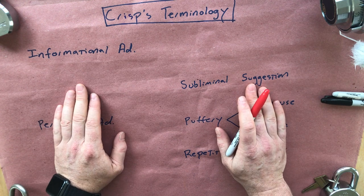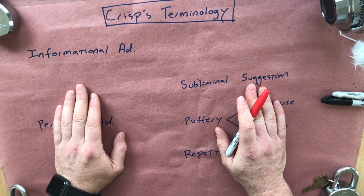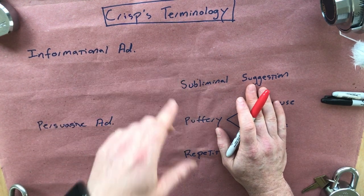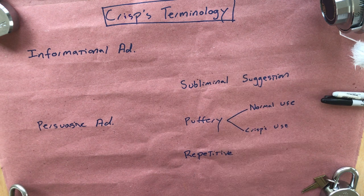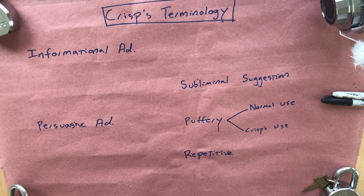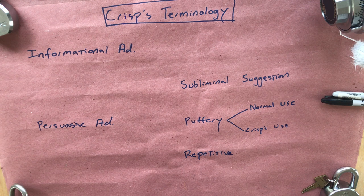I wanted to make a quick video just to explain some of the terminology that Crisp was using. Most of it's pretty simple and straightforward, with one exception that's actually really unnecessarily confusing. So, let's do this.